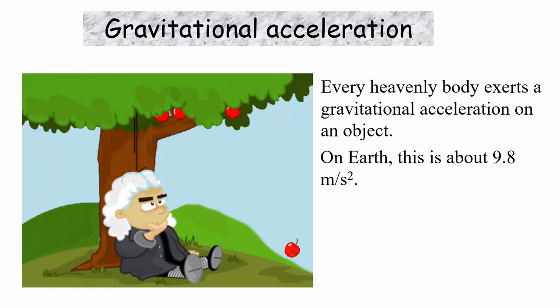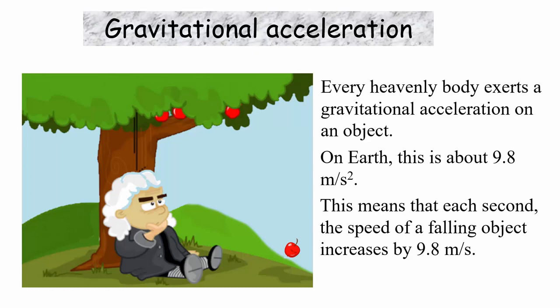Now, what does that mean? Well, gravitational acceleration means the acceleration experienced by falling objects due to the gravitational force of the Earth. And 9.8 meters per second squared means that as the object falls, each second its speed increases by 9.8 meters per second.